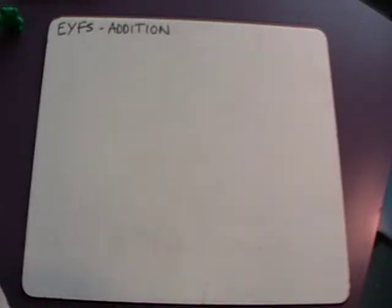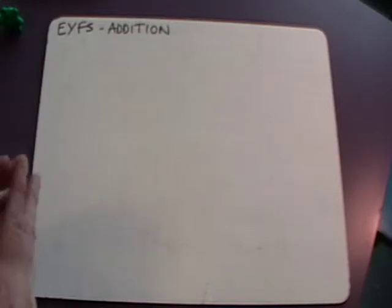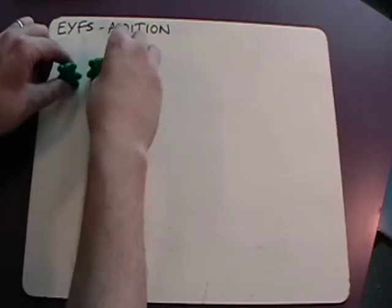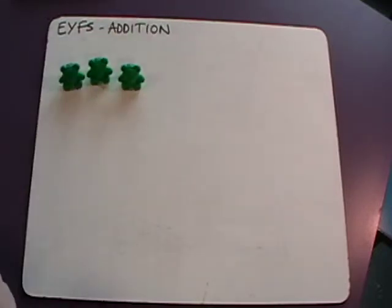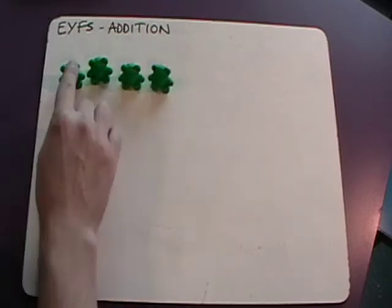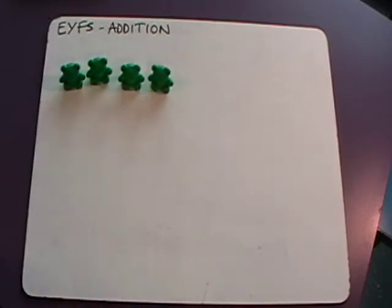This is how we begin to teach addition in the early years foundation stage. We'd first start with the concept of one more. So for example, if we had three bears and then we added one more, then we need to count up one, two, three, four bears.